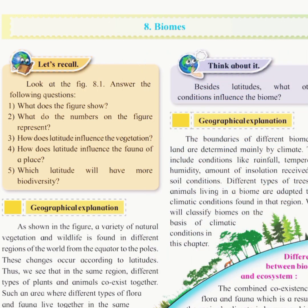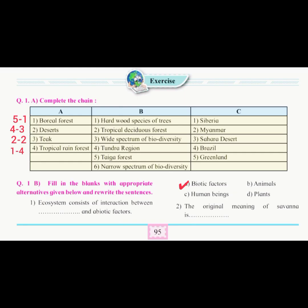Now I am giving a question-answer session for Chapter 8: Biomes. Get ready with your pencil, textbook, or notebook and note down everything. I am only reading the questions; for the answers you have to stop the video or take a screenshot of a particular answer and write it afterwards. Question number one A: complete the chain — first boreal forest, fifth one desert, fourth, third teak, second tropical rainforest, first and fourth.